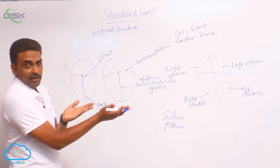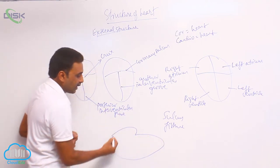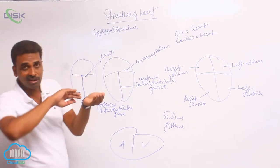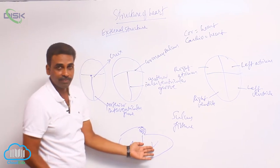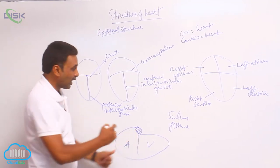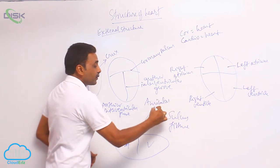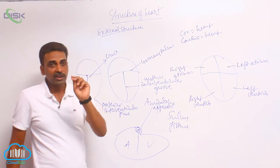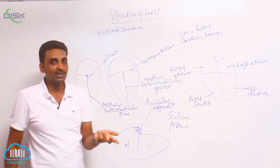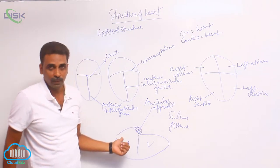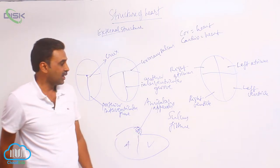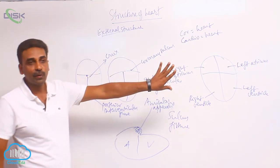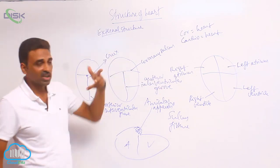When viewed from the side, the atria partially overlap the ventricles in the region of the coronary sulcus, and that overlapping area is called the auricular appendix. In older textbooks, the word 'auricle' was used for the atria, but 'auricle' is no longer used for the whole atrium — it now refers only to that small area covering the ventricle, which is called the auricular appendix.